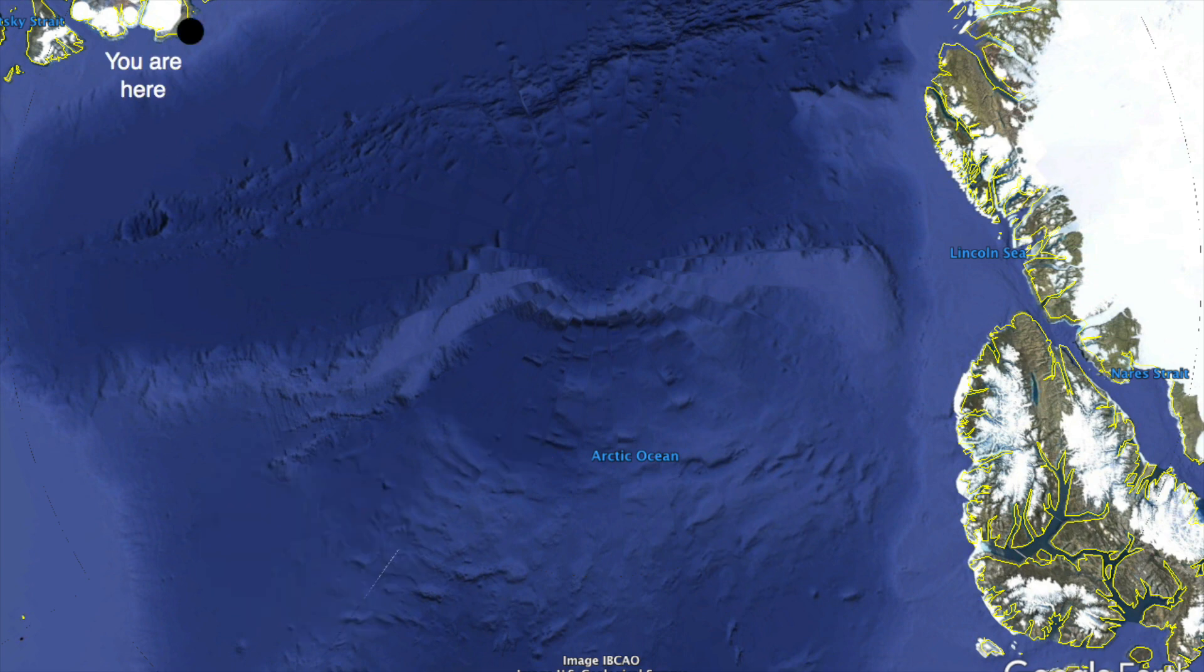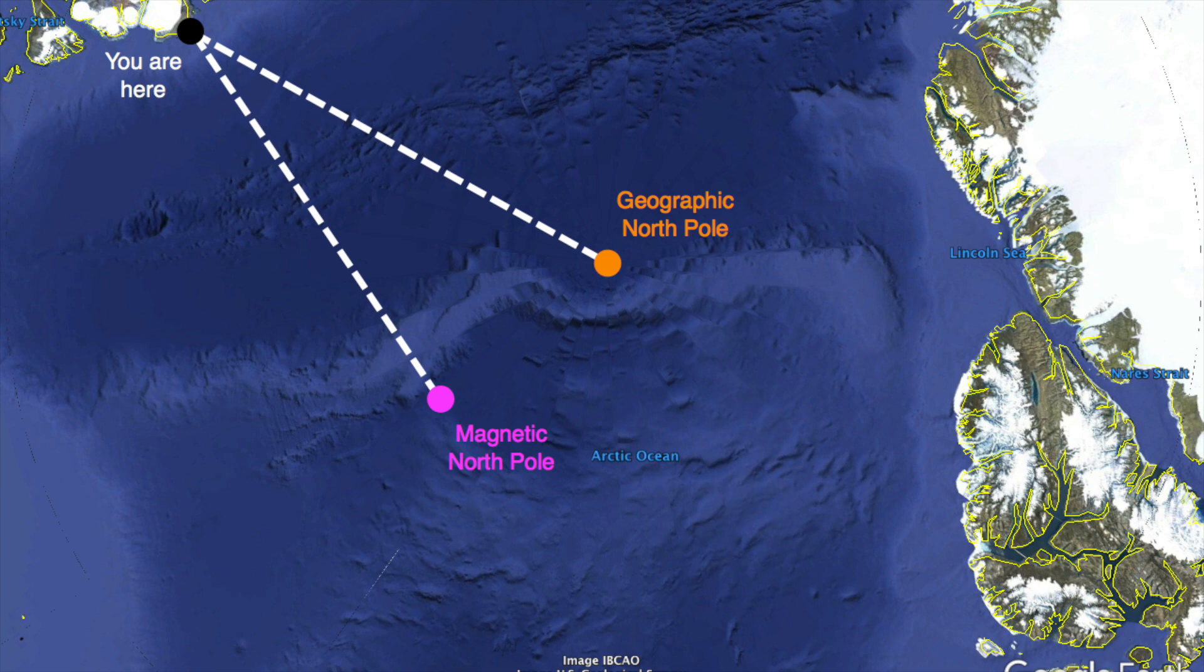If you were to draw a line to the geographic North Pole and to the magnetic North Pole, the angle between those lines would be the magnetic declination at your location. Declination measures the difference between the two points.